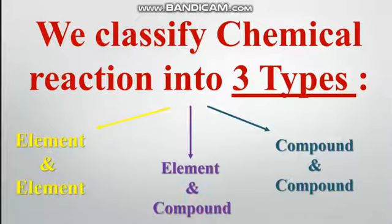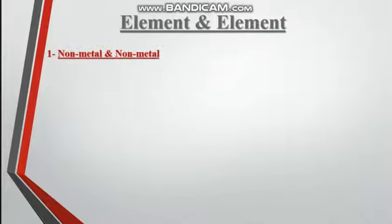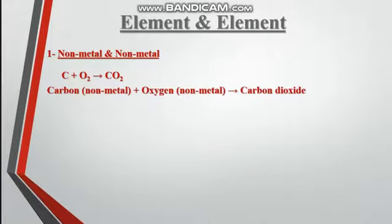Let's start with the first type: the reaction of an element with an element. The first case is when both elements are non-metals. For example, C plus O2 forms CO2. C is carbon, which is an element, and O2 is oxygen, which is an element, forming CO2 which is carbon dioxide, a compound. Second example: S plus O2 forms SO2.